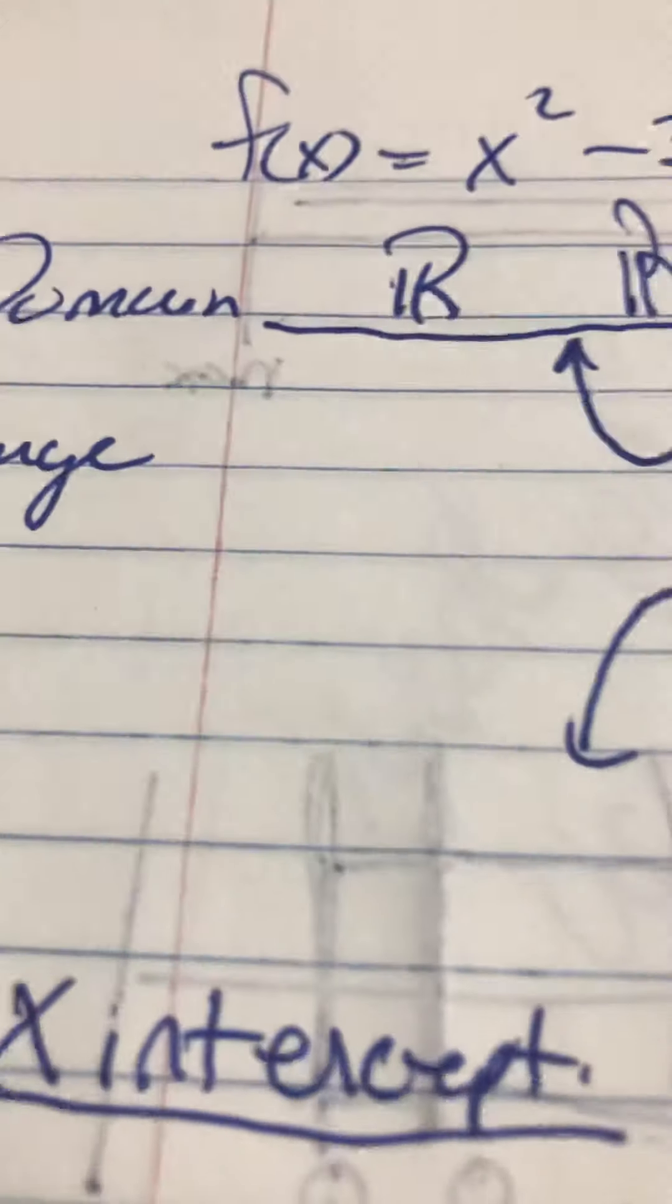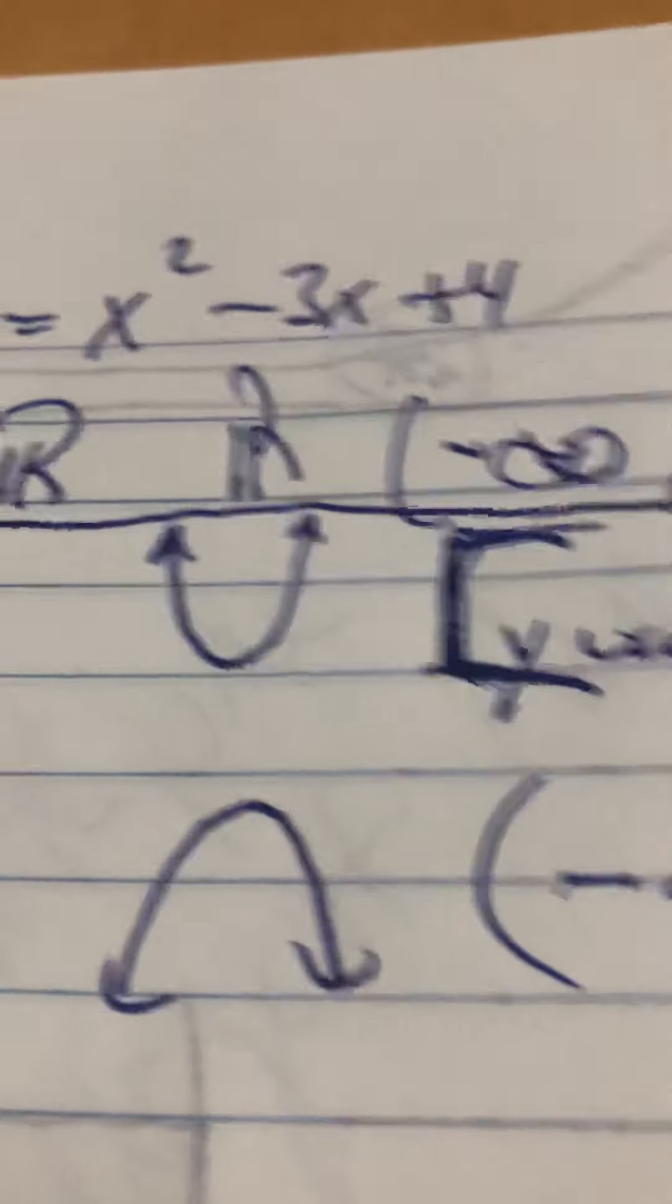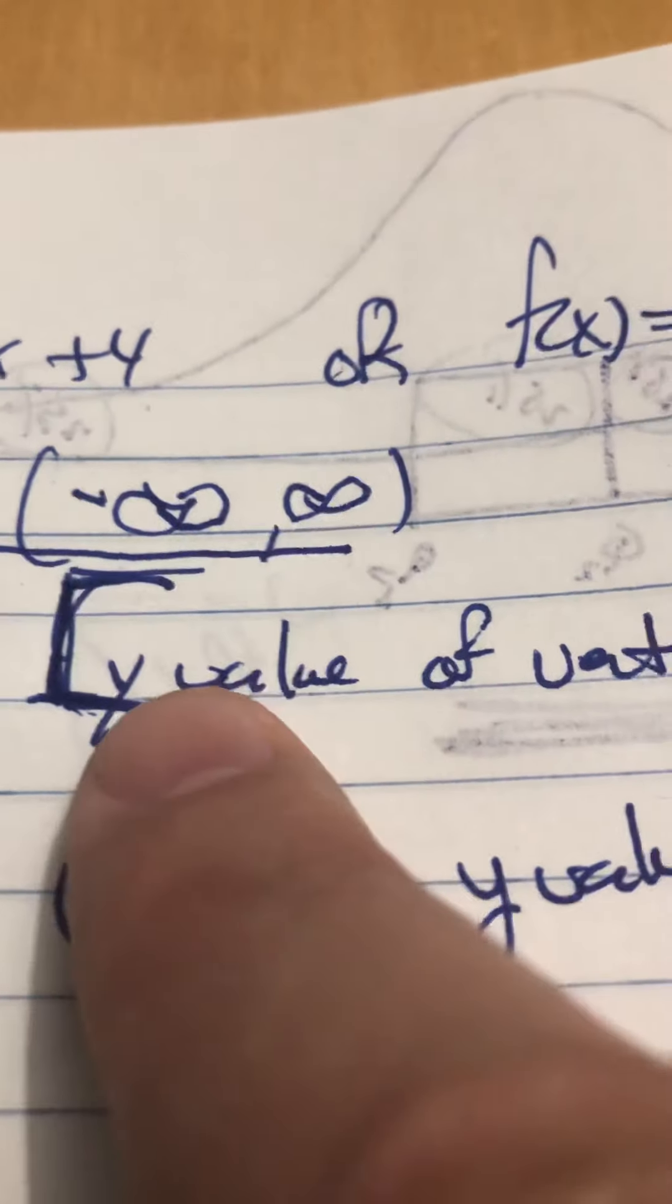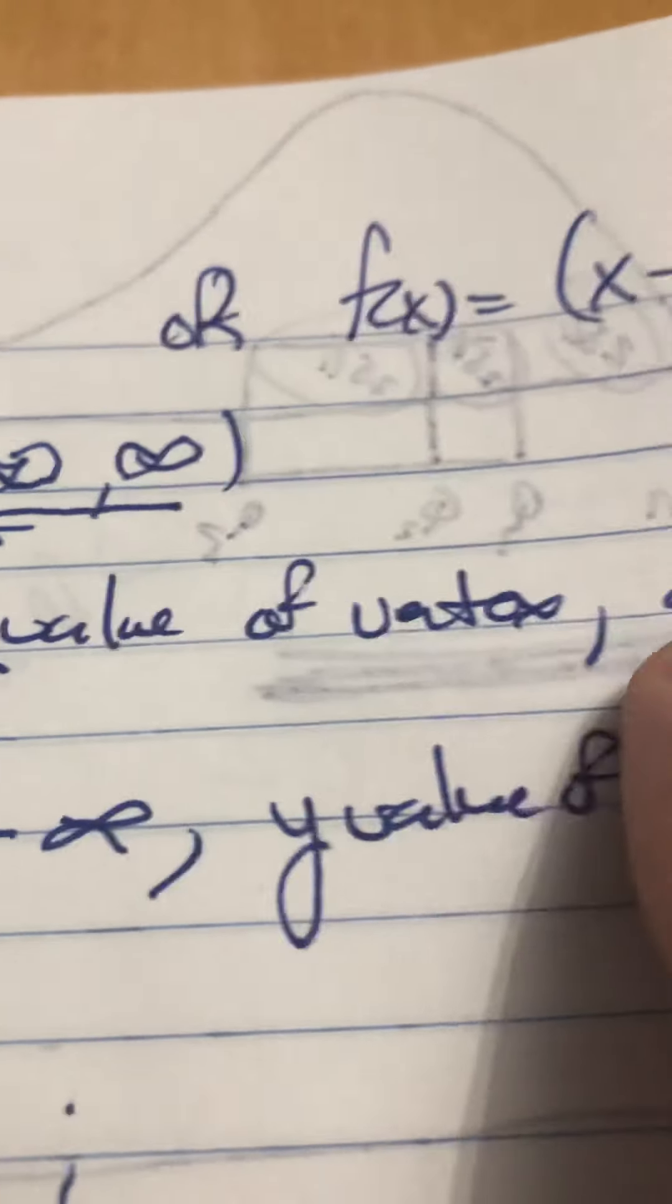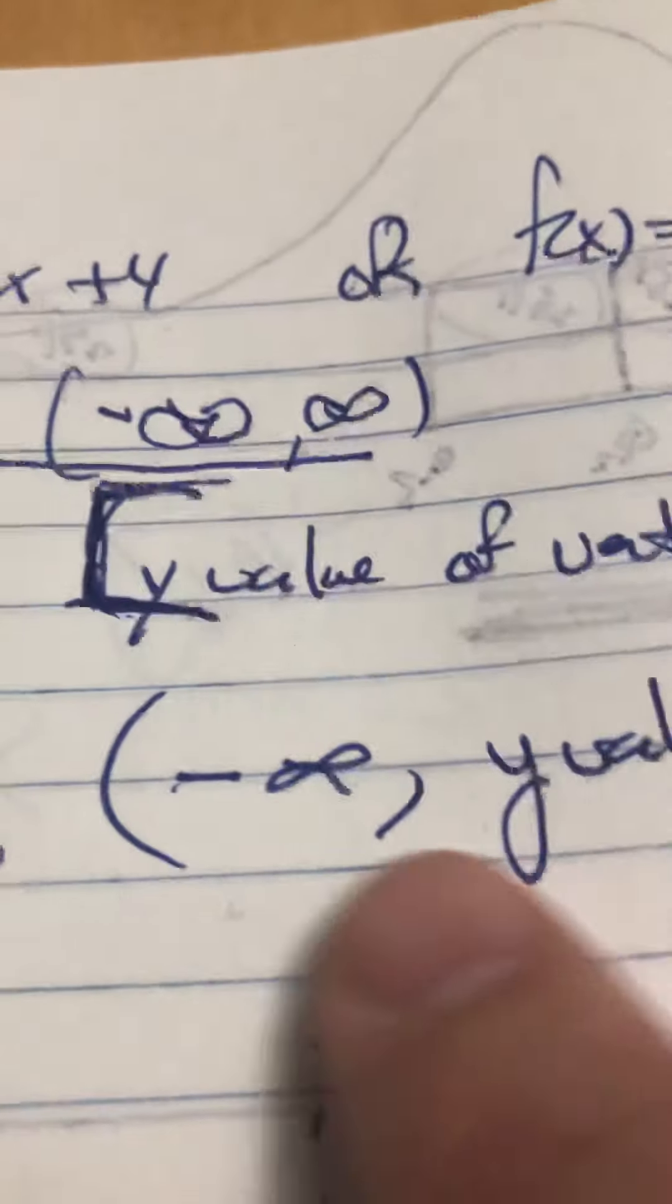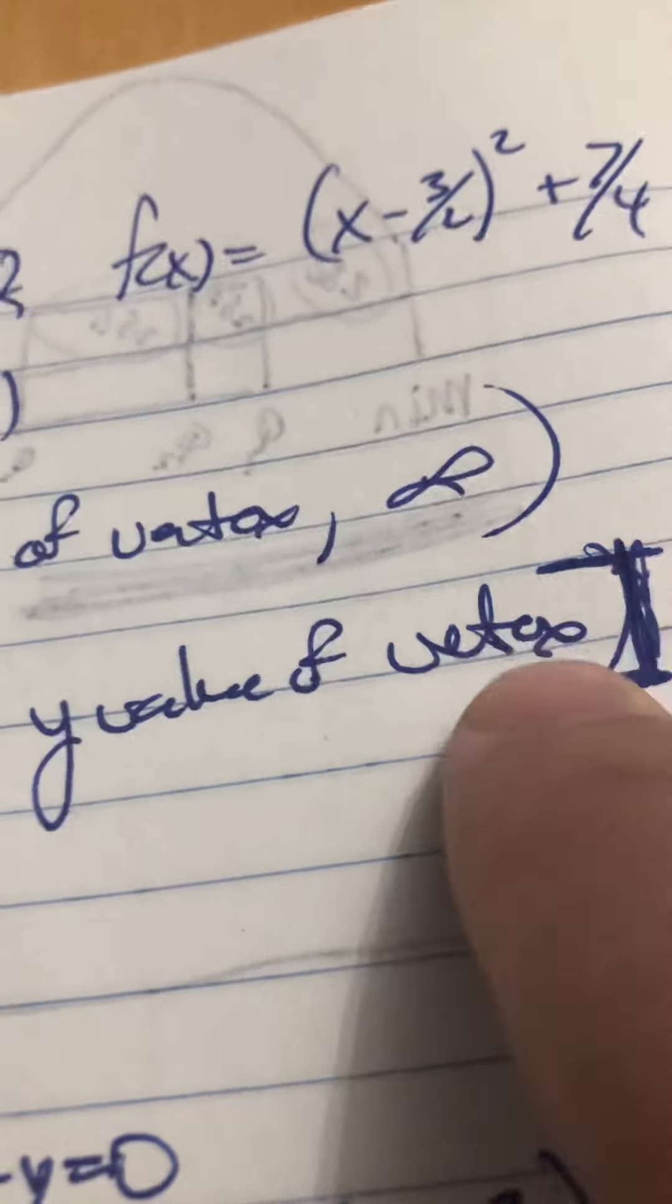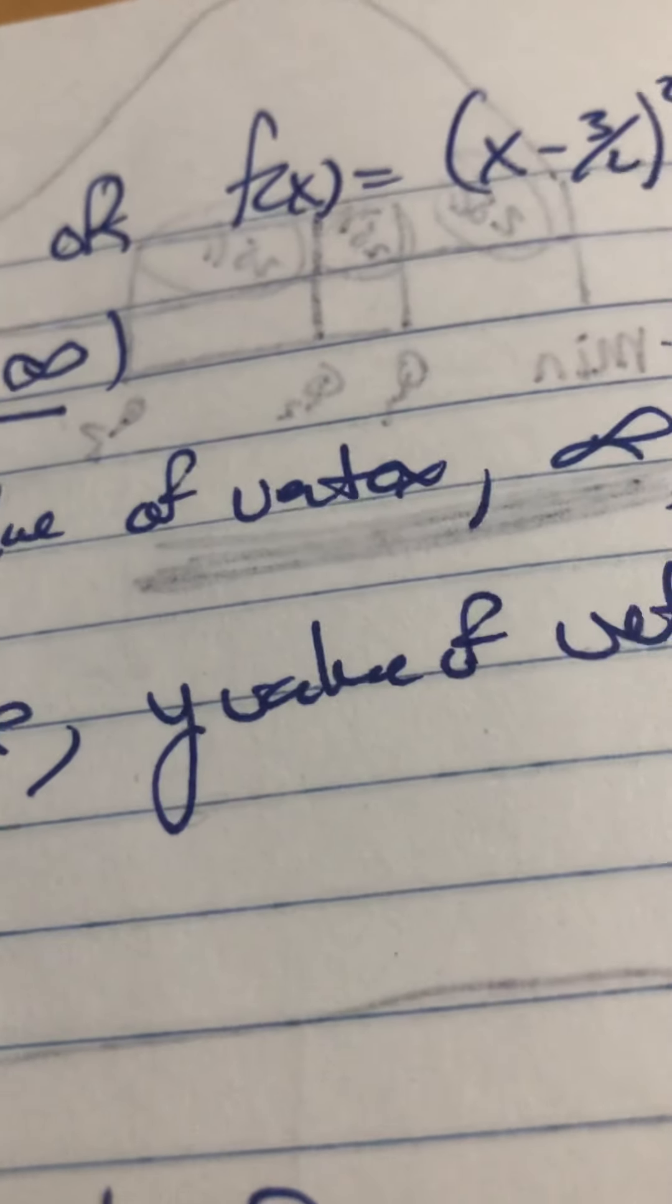The range, if it opens up, you will take and you include the y value of the vertex, and then that goes off to infinity. And if it opens down, it's negative infinity to the y value of the vertex. And we close that off, because we include that as well.